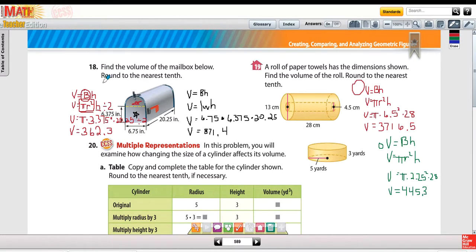So on number 18 I started by just separating this mailbox into two different parts. The top is going to be half of a cylinder which is why you see this divided by two in the second line of my formula, because it's not a full cylinder it's half of one. When I plug in my numbers for my values I have π, 3.375 is the radius of this half cylinder. I knew that the whole way across was 6.75 so I had to divide that in half to get the radius which is 3.375.